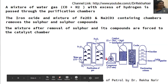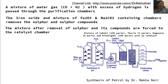After removal of sulfur and its compounds, the mixture is compressed at 5 to 25 atmospheric pressure and forced into the catalytic chamber. The catalyst used consists of cobalt, thoria, magnesia, and kieselguhr in a specific ratio: cobalt 100 parts, thoria 5 parts, magnesia 8 parts, and kieselguhr — which is essentially a silica content — 200 parts. This mixture acts as the catalyst.